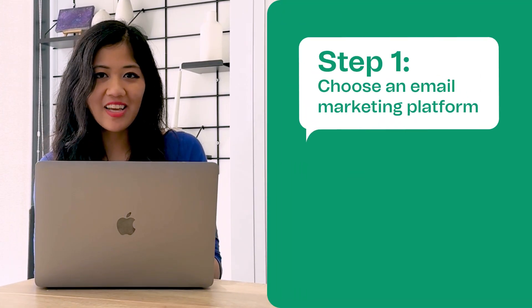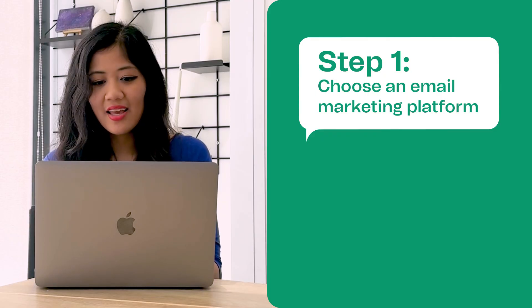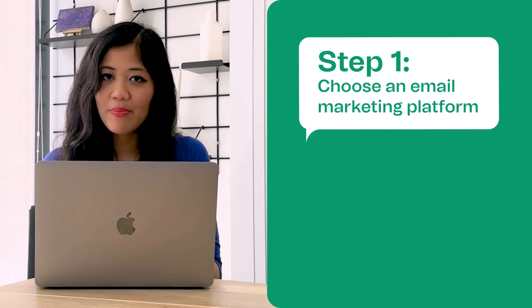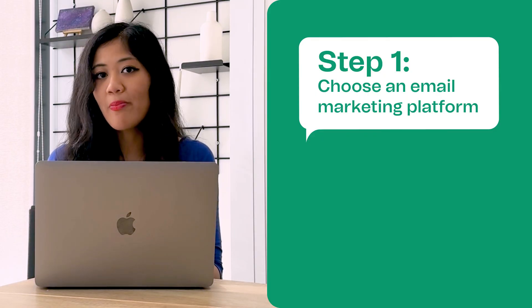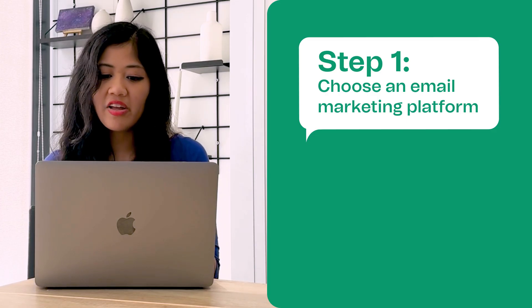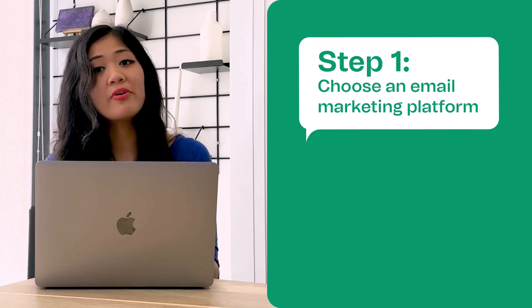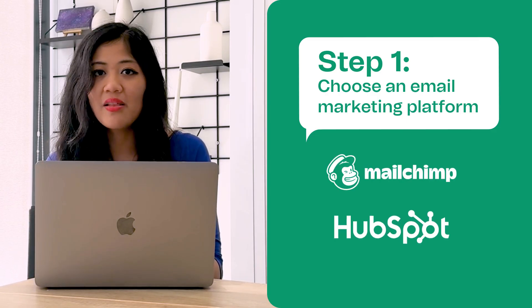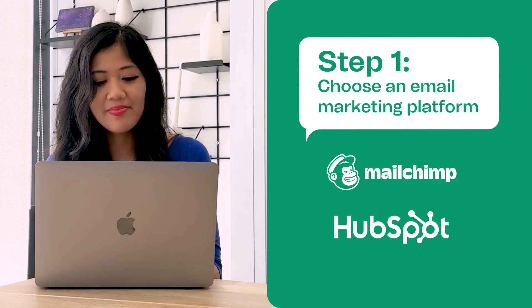So that's why you should get started with email marketing, but how exactly do you do it? Let's get into step one: choose an email marketing platform. This is a tool you're going to use to both create your email content and also manage your contact lists. You may already be familiar with some of the big names out there like MailChimp or HubSpot, but just know that there are a lot of other different options you can consider.